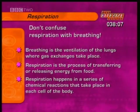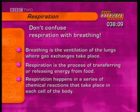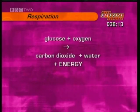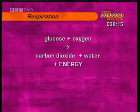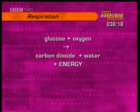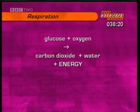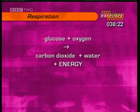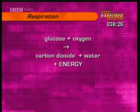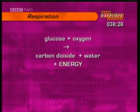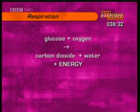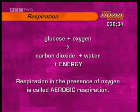Respiration happens in a series of chemical reactions that take place inside each cell in the body. The word equation for respiration is: glucose from food plus oxygen from inhaled air gives carbon dioxide plus water plus energy. Glucose sugar is oxidised in all the cells of the body and the cells use the energy released. The by-products are carbon dioxide and water.